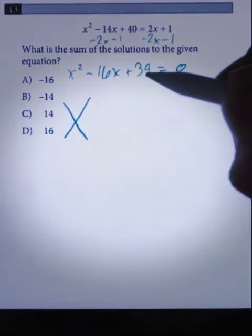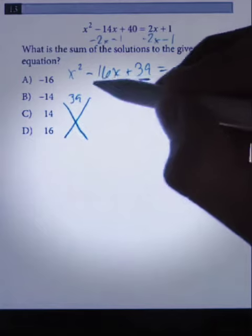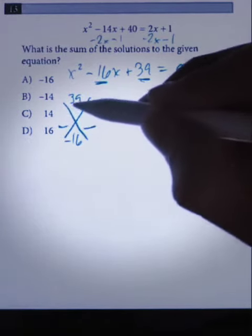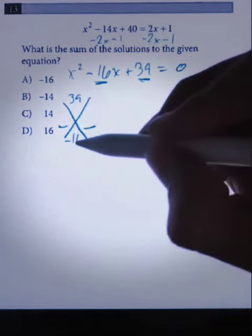I'm going to use the x method to factor. So that's when you put this number on top and this number on the bottom, and we try to find two numbers that multiply to 39 but add up to negative 16.